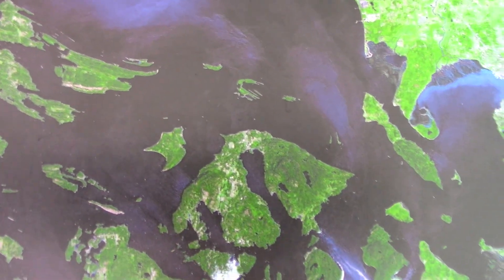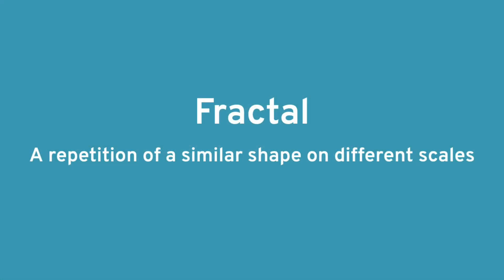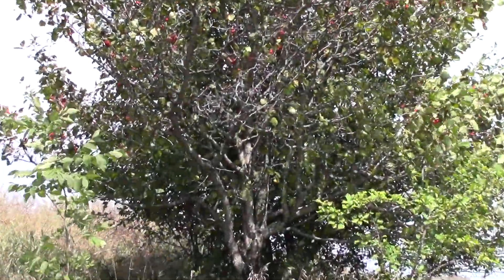This is just one of many examples of fractals in our world. A fractal is a repetition of a similar shape on different scales. For example, a tree has many branches.